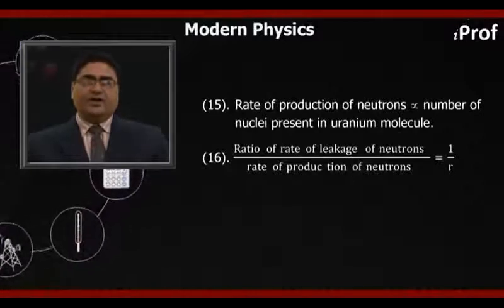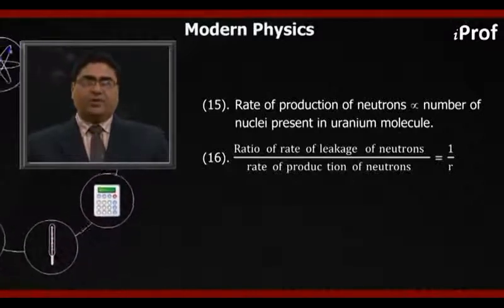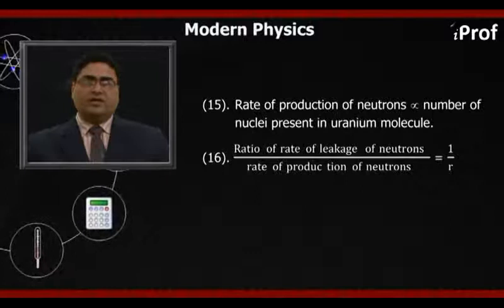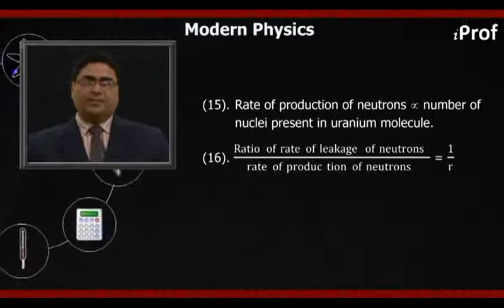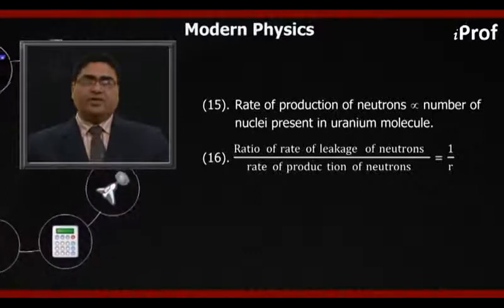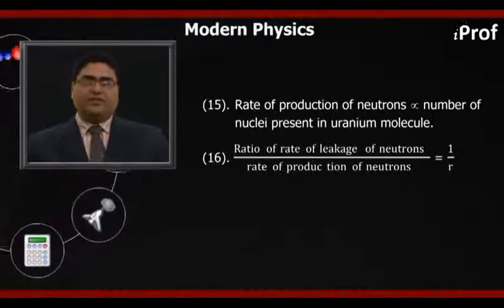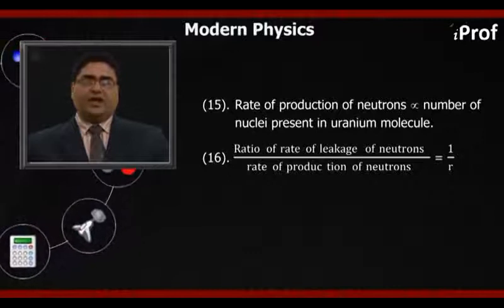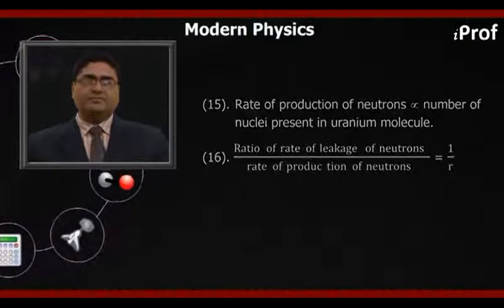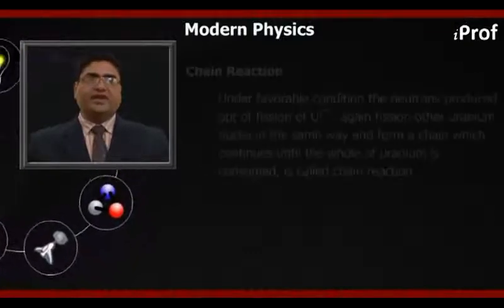Ratio of rate of leakage of neutrons to the rate of production of neutrons is proportional to 1 upon R. Now let's see chain reaction.